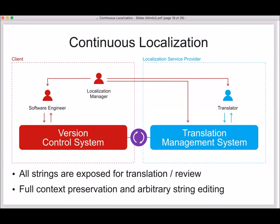With all strings available for translation, you have full context — the full context is preserved. And you can arbitrarily change strings on your translation server. Remember the example of wanting to amend translations after a job is done? With typical localization automation, you'd need to gather files containing certain terms and create a new order. Here, you don't have to deal with jobs or orders. All strings are available for translation. You just go to the CAT tool, find the right translation, change it, and that change will be integrated into the product.